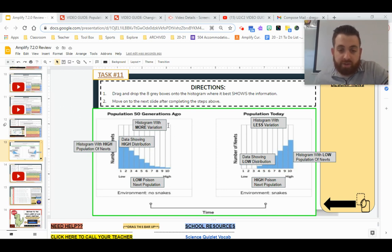Starting on the left, we have the histogram that has more variations. If you notice, we have all 10 of our variations showing that there's data or different groups of newts with these different poison levels versus over here, we have one, two, three variations that are empty.